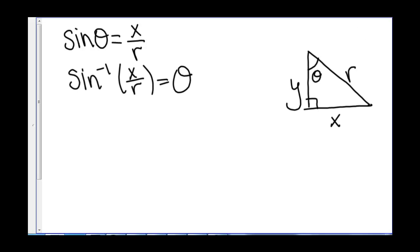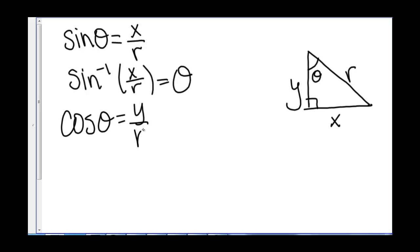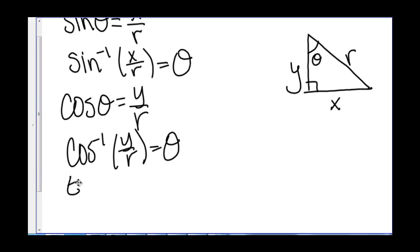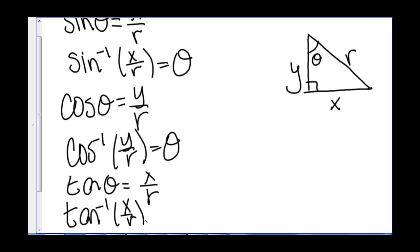So inverse sine asks: what is the value of theta given x over r? Similarly, cosine of theta is y over r, so inverse cosine of y over r gives angle theta. And tangent of theta equals x over r, so the inverse tangent of x over r equals theta.